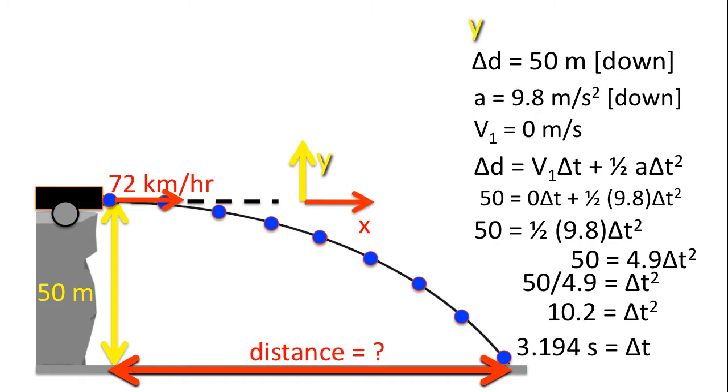This is telling us that the projectile is in the air for 3.194 seconds before hitting the ground. So from when it's launched to when it hits the ground, that's the time it takes for this to happen.